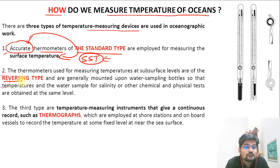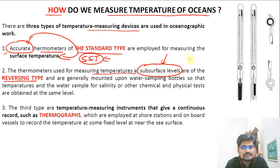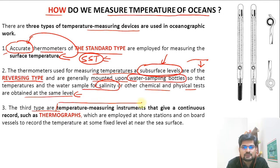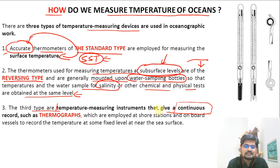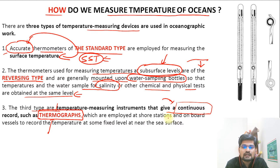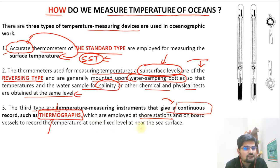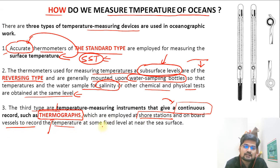The second type is the reversing thermometer, used for measuring temperatures at subsurface levels — not SST, but within the surface. The third type gives a continuous record and is called thermographs. The key feature of thermographs is continuous measurement; they are employed at shore stations and onboard vessels, fixed at a particular level near the sea surface.